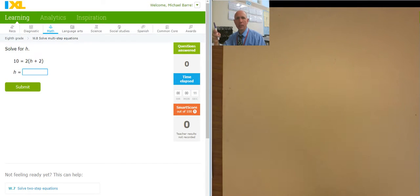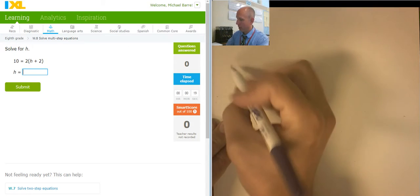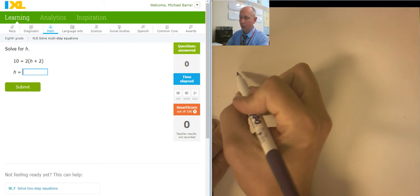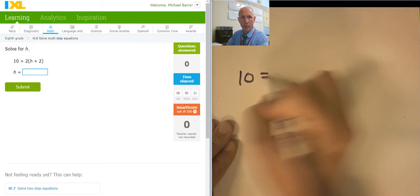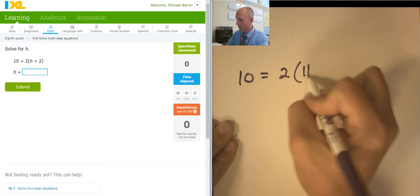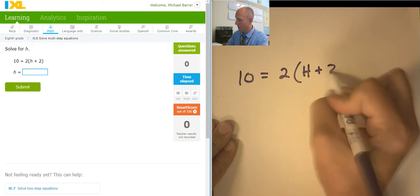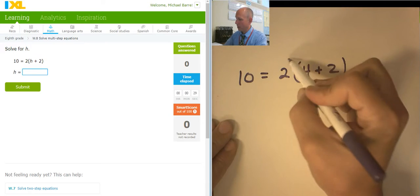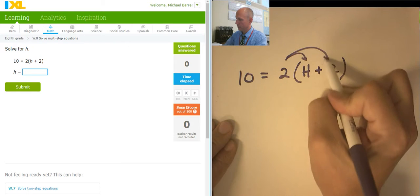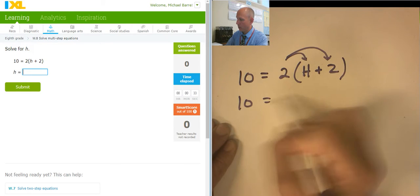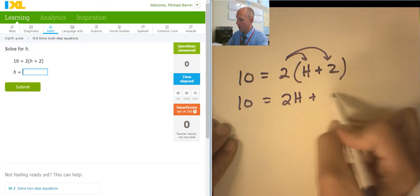Hello. Let's do some math. This is solving multi-step equations. You are definitely going to need a paper and pencil or something in front of you to do these problems too. So I'm going to start with some distribution right there. That's going to give me 10 equals 2h plus 4.